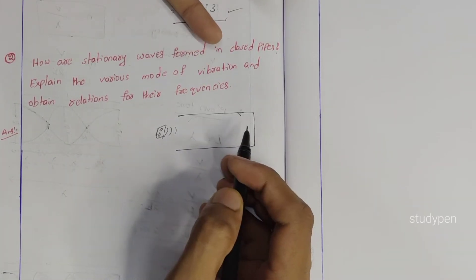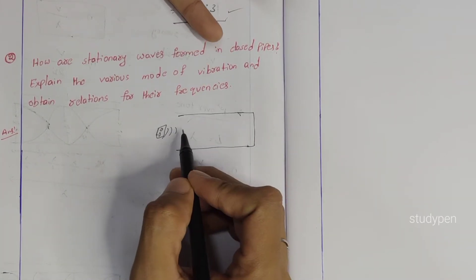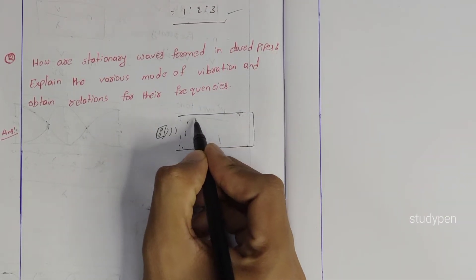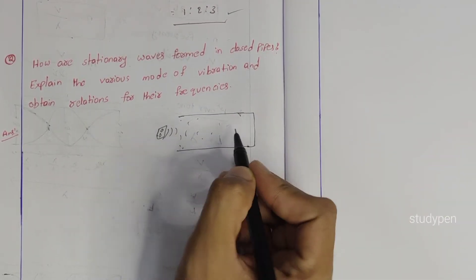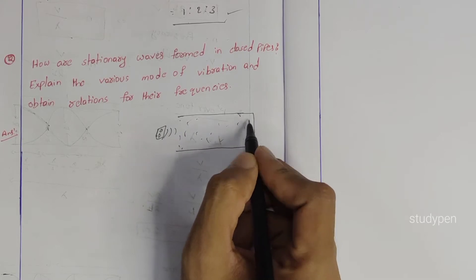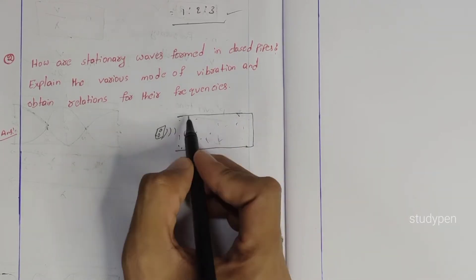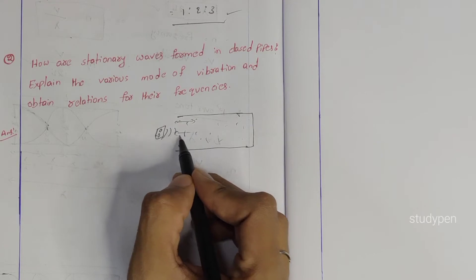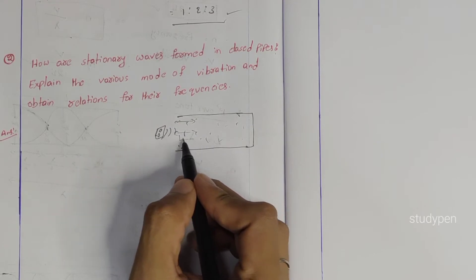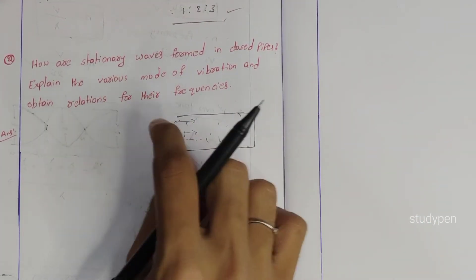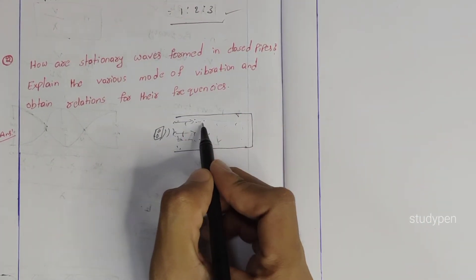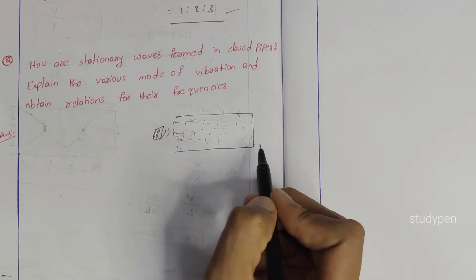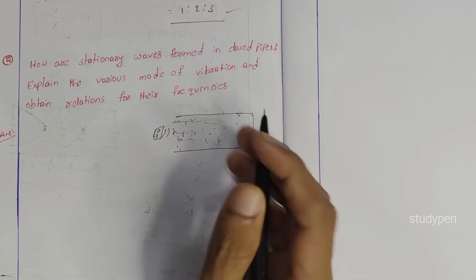I'll show you the sound waves with high amplitude. For example, here are air molecules — you can see a lot of air molecules. When sound waves travel, you can see the high amplitude. The maximum amplitude and speed are visible. At the closed end, the amplitude is at its maximum.